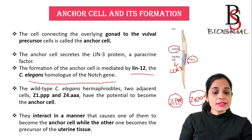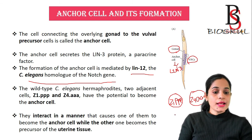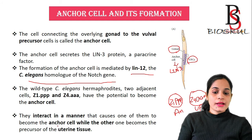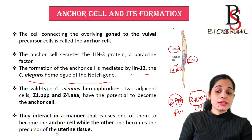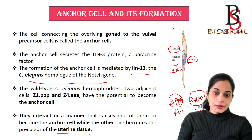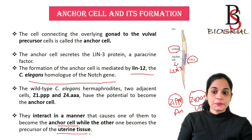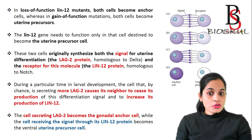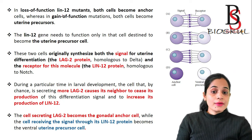One cell will become the anchor cell, while the other cell will become the precursor for the uterine tissue — represented here as UPC. If there is a loss of function of the lin-12 mutant, it will affect anchor cell formation. Lin-12 protein plays an important role in this process.